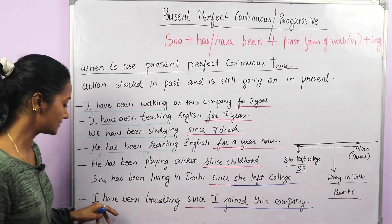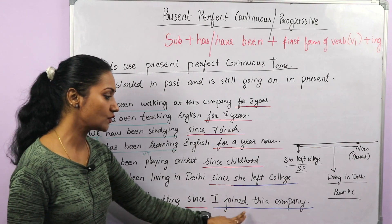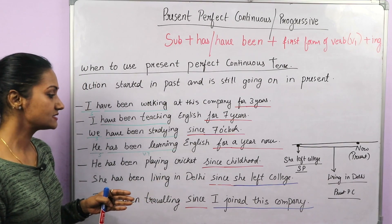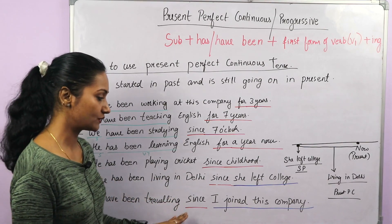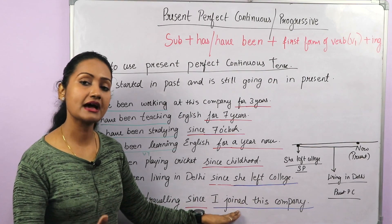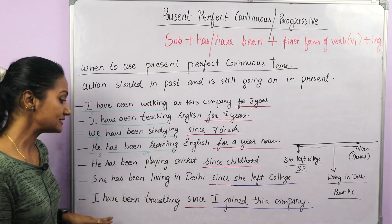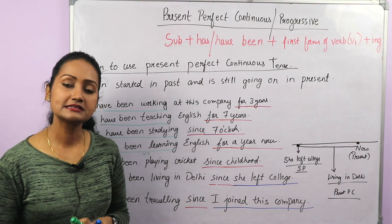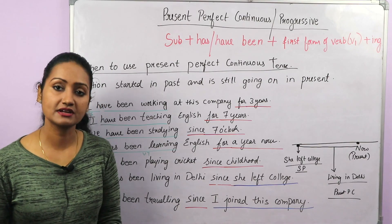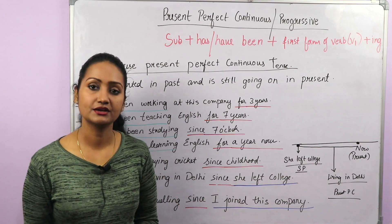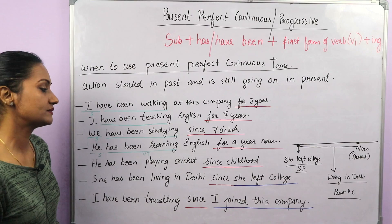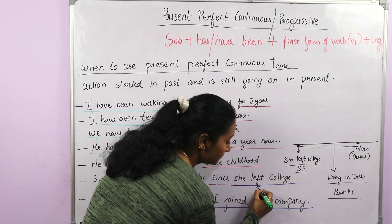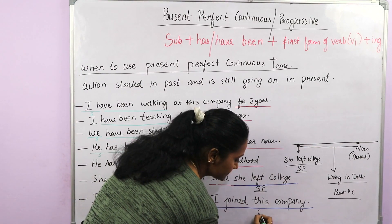Another example: 'I have been traveling since I joined this company.' 'I joined this company' happened in the past — that is simple past — and since then I have been traveling and I am still traveling. So generally we have a combination of present perfect continuous and simple past in these kinds of sentences.